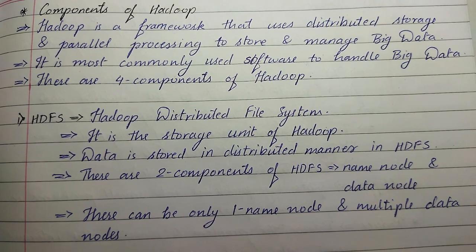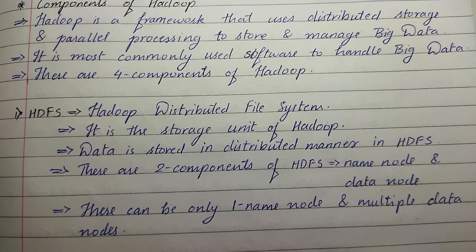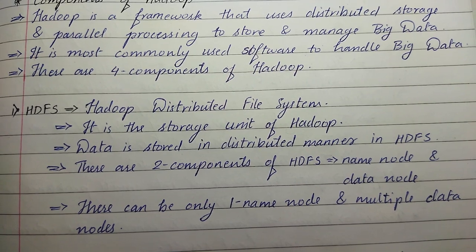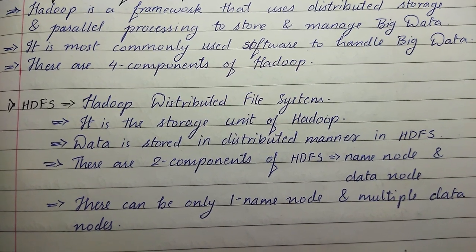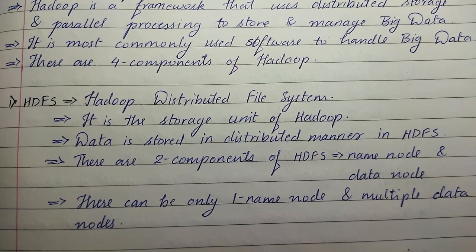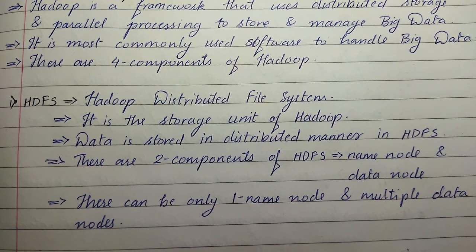The first one is HDFS, Hadoop Distributed File System. It is the storage unit of Hadoop. Data is stored in a distributed manner in HDFS, and there are two components of HDFS: name node and data node. There can be only one name node and multiple data nodes.